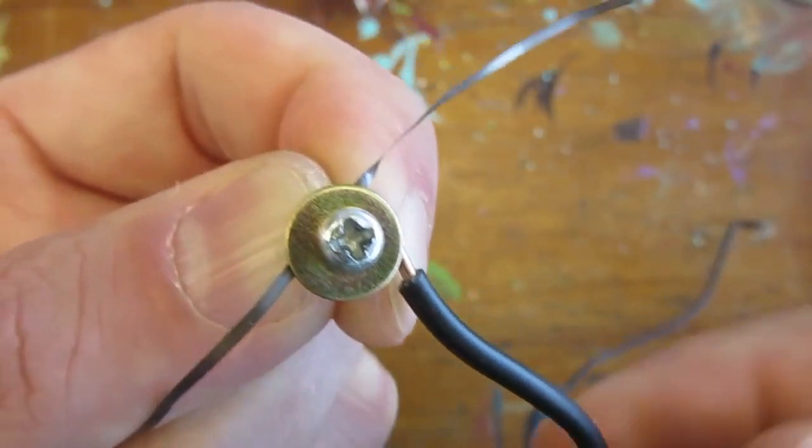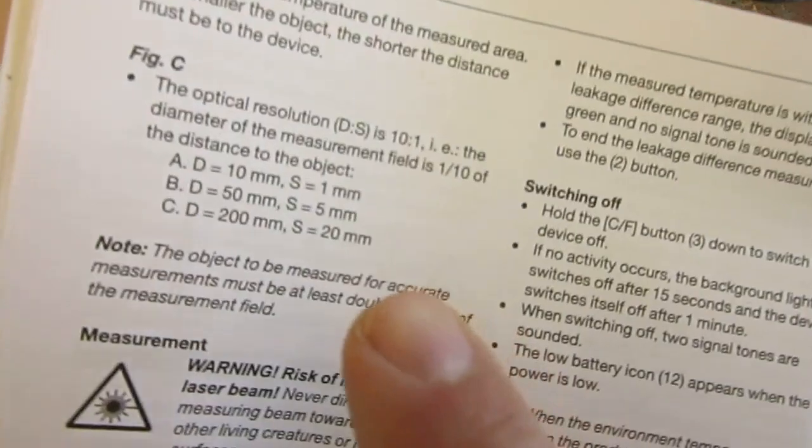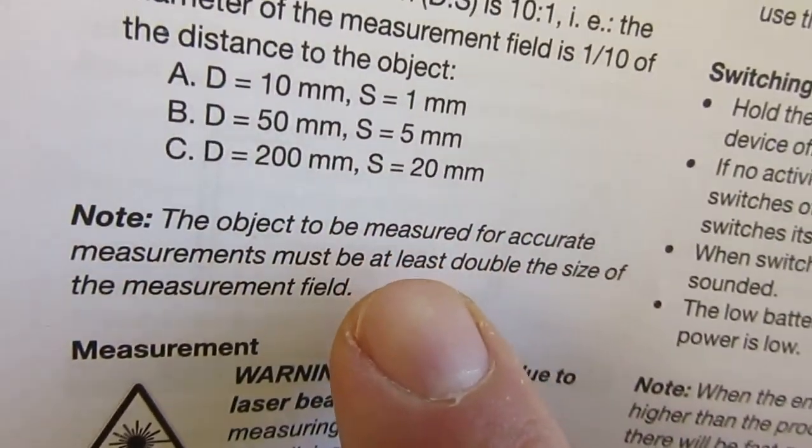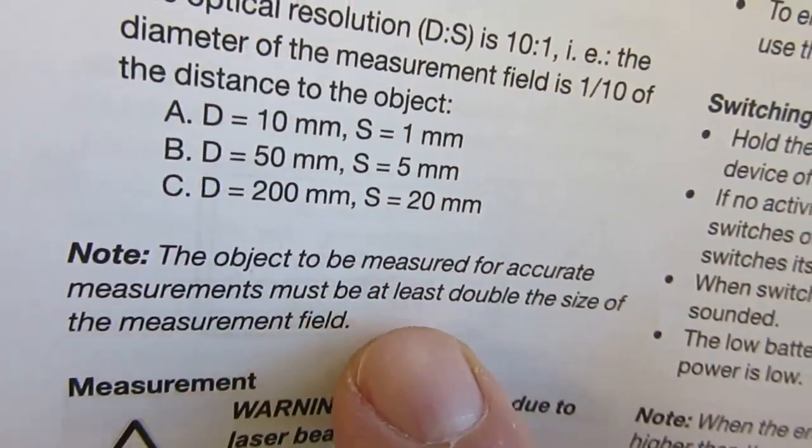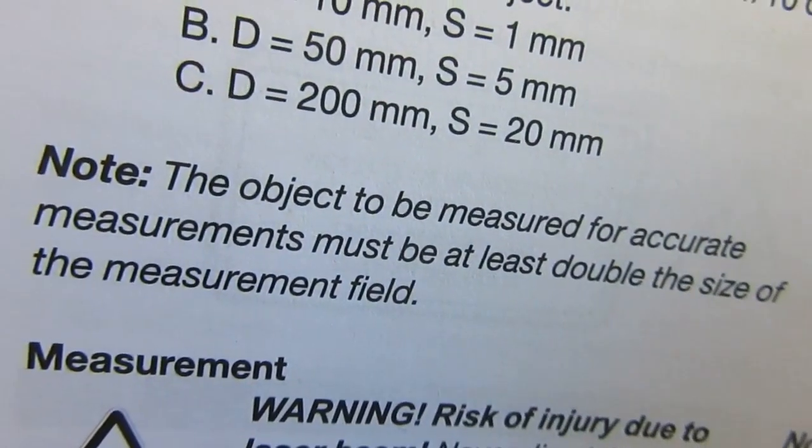Last, the infrared thermometer was not the right instrument to use to measure the wire temperature. It all comes down to that statement found in the user manual: the object to be measured for accurate measurements must be at least double the size of the measurement field.